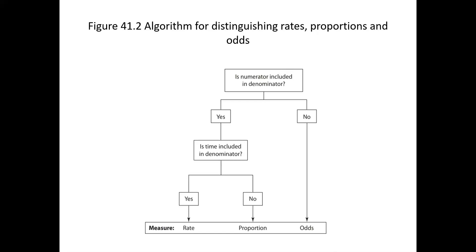This is a very useful table for SPM. When doing research in a medical department, knowledge of these distinctions is essential. Rate means numerator, denominator, and time are all involved. Proportion means numerator and denominator are present but time is not involved. Odds means only the numerator is present — denominator is not involved and time is also not involved.